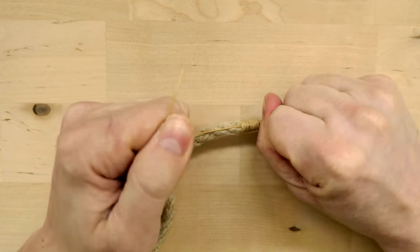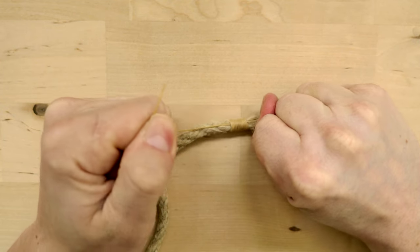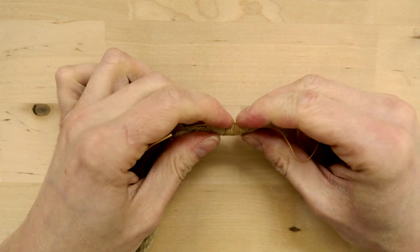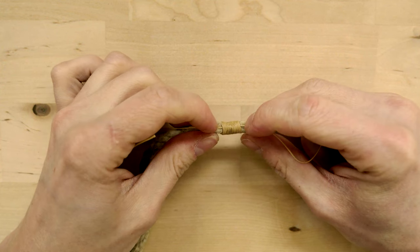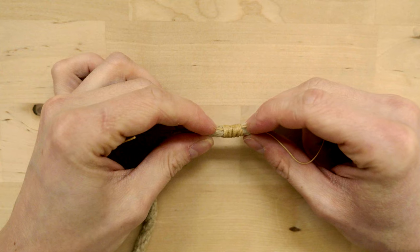At that point pull on both of your ends and this secures your whipping. Now you could just snip off the ends and your job would be complete.